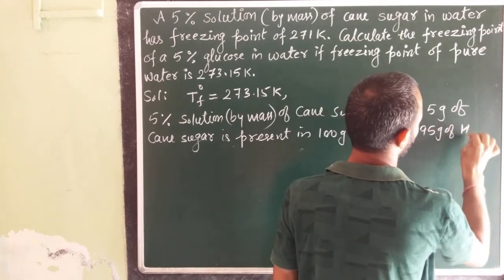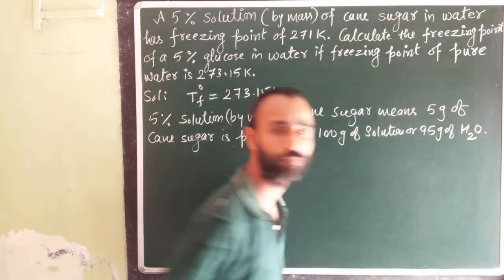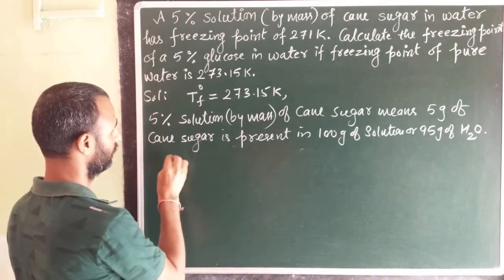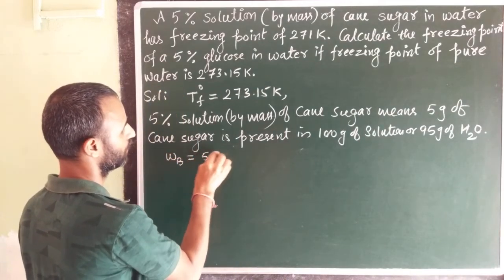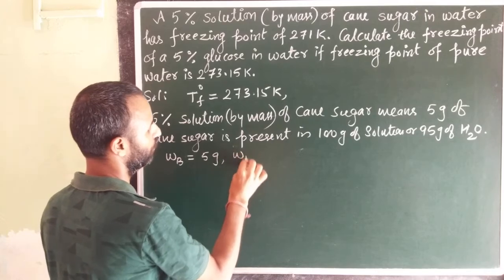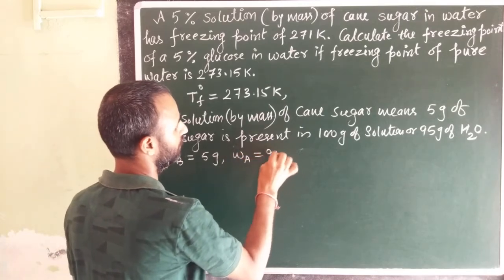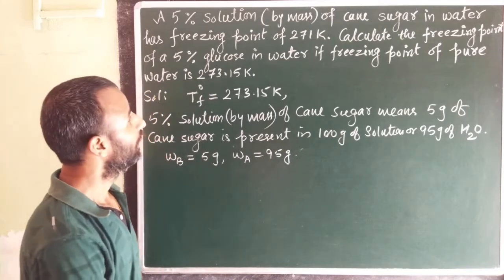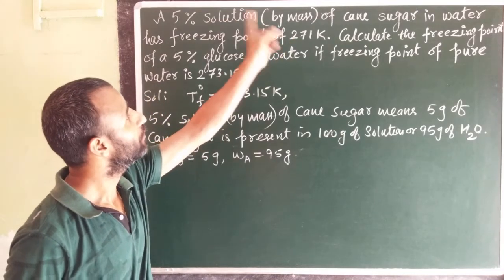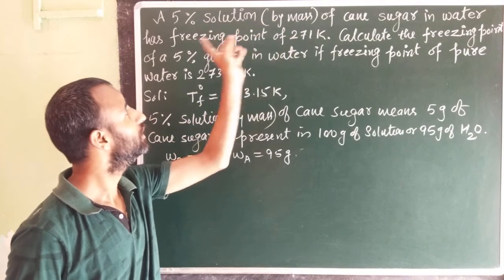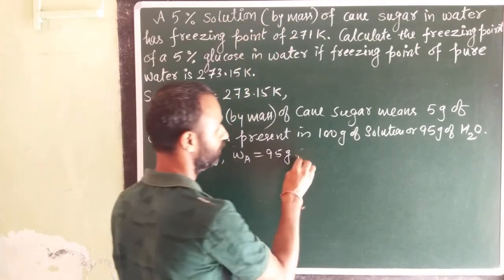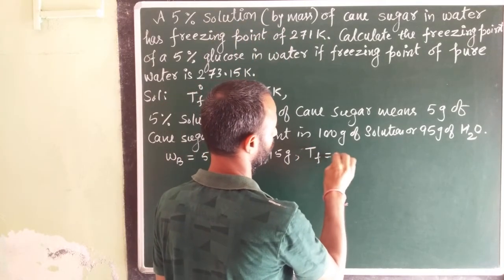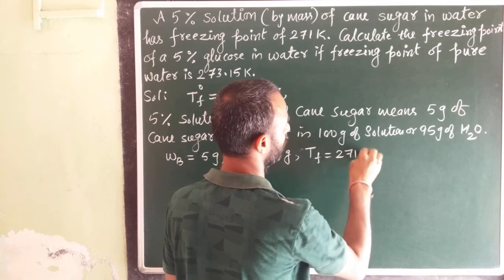Because solution is aqueous, from here we get WB as 5 gram, WA as 95 gram, right? And when 5% solution of cane sugar is there, freezing point is 271 Kelvin.